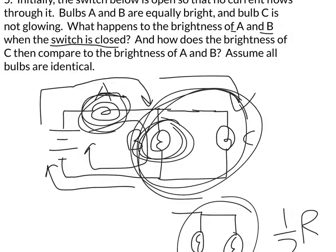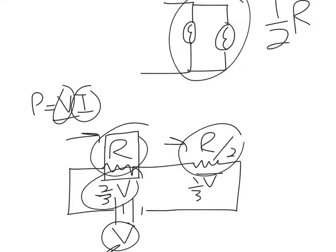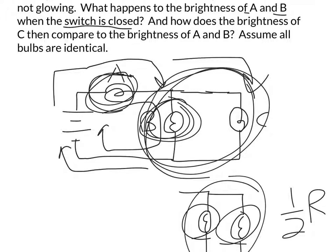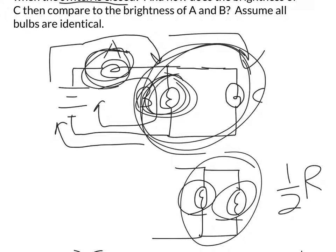How does the brightness of A and B change when the switch is closed? A should get brighter. B is now operating at one-third of the voltage when it used to operate at V/2, so B gets dimmer. B and C should be the same brightness — they're both getting V/3 since anything in parallel gets the same voltage. So C equals B, and both are less than A. A gets brighter, B gets dimmer, and C equals B.